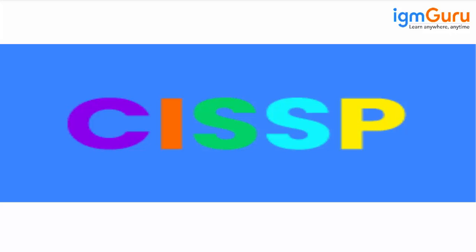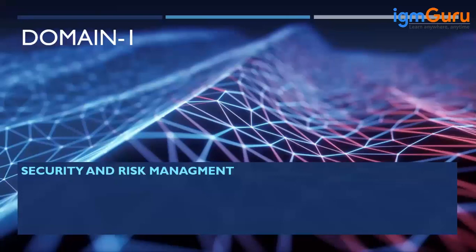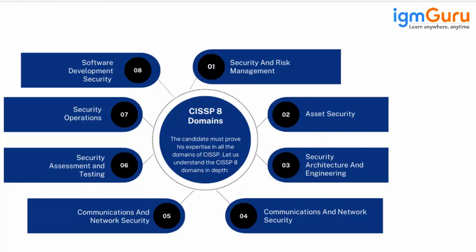In CISSP, a couple of things we have to understand — what exactly the content is and how we are going to approach the topics in the syllabus. In CISSP certification, there are a total of eight different domains, and each domain discusses a specific part of security. These eight domains cover eight different areas, such as network security and software security.